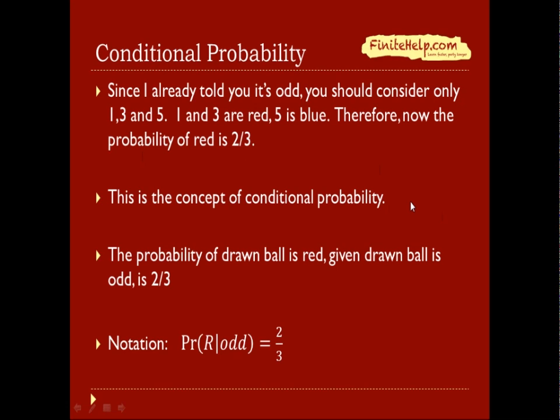This is the concept of conditional probability. The probability of a drawn ball being red, given the ball is odd, is 2/3. And here is the notation. This vertical line is given, so this is the probability of red, given odd.